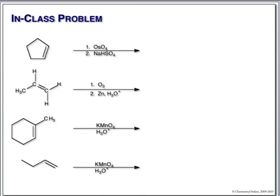Osmium tetroxide followed by sodium hydrogen sulfite — this should be sulfite, not sulfate. This is going to give us a 1,2-diol with cis stereochemistry. We need the second step with sodium hydrogen sulfite because we are left with an osmium ester that does not break down spontaneously. What you have to remember to show here is the stereochemistry: both hydroxyl groups on the same face of the molecule.